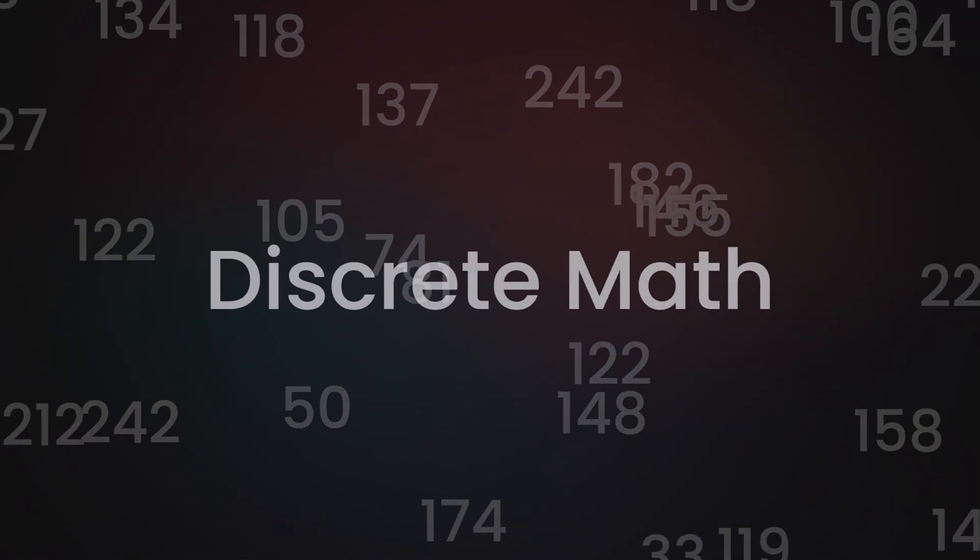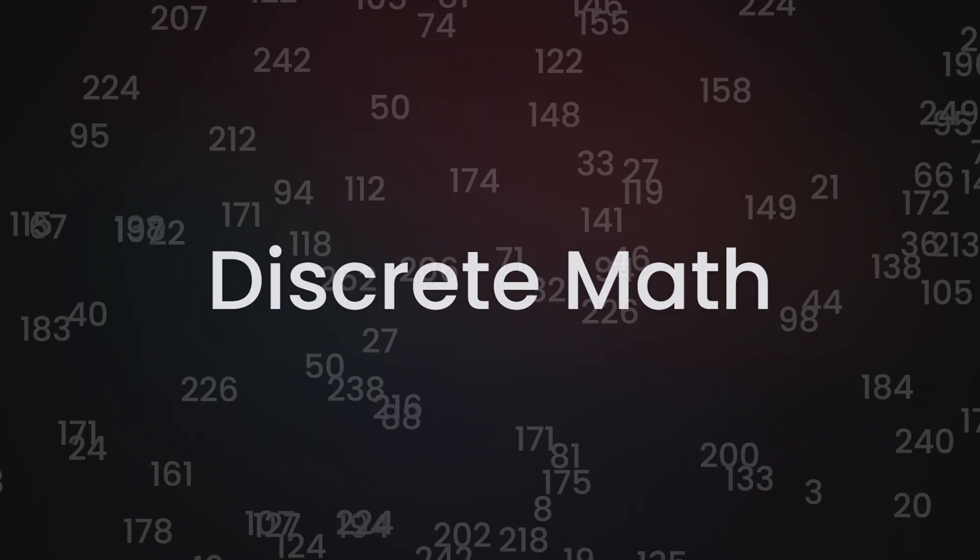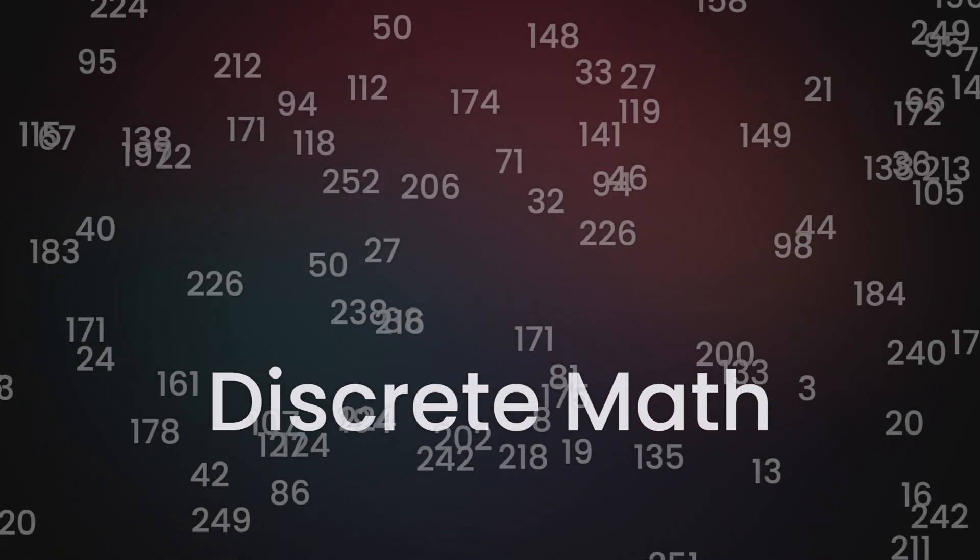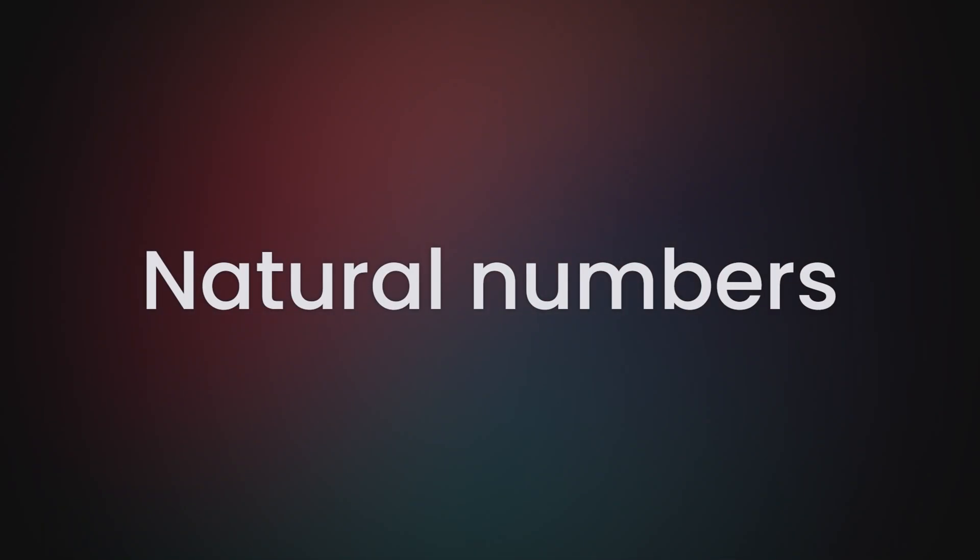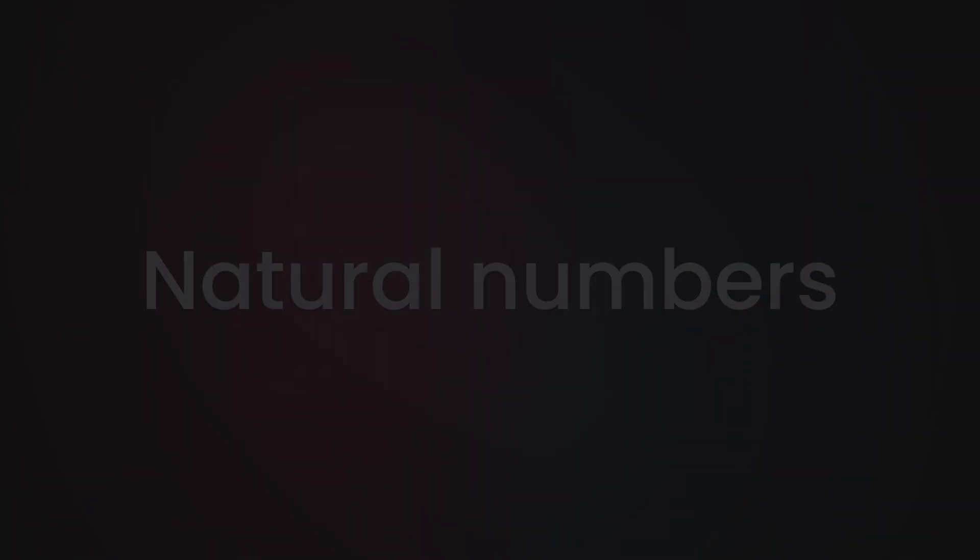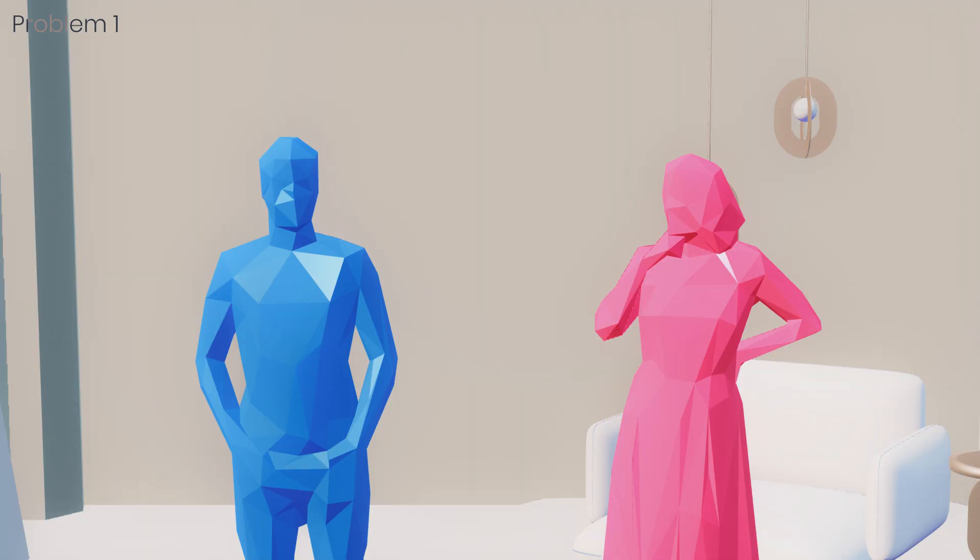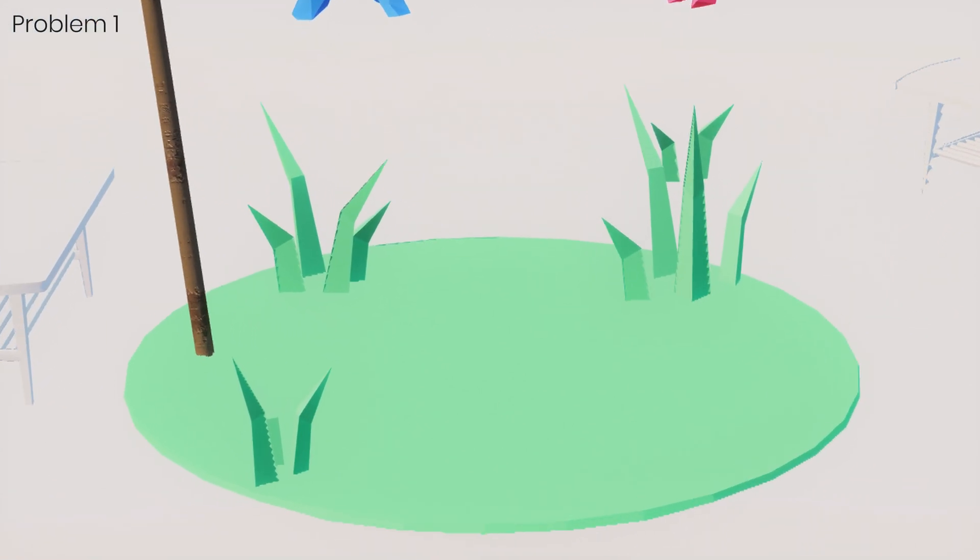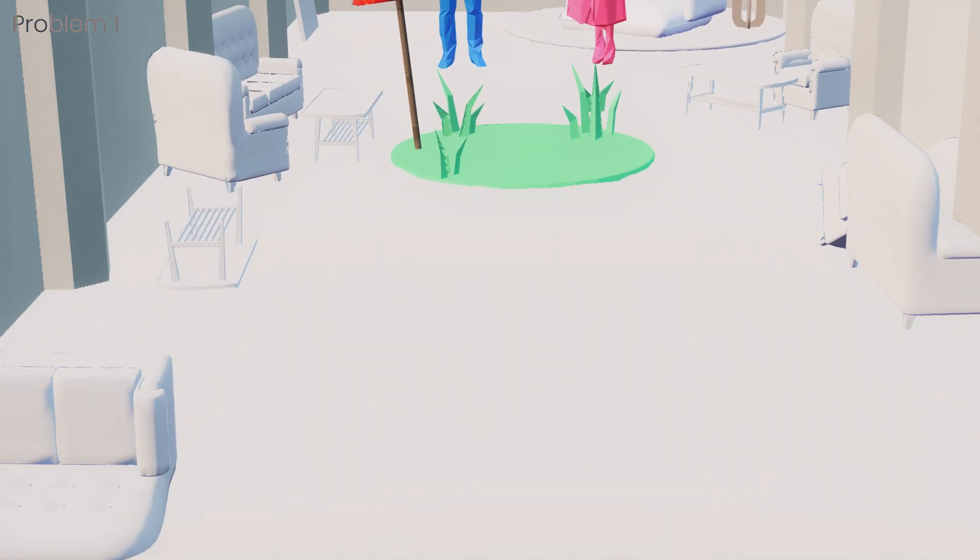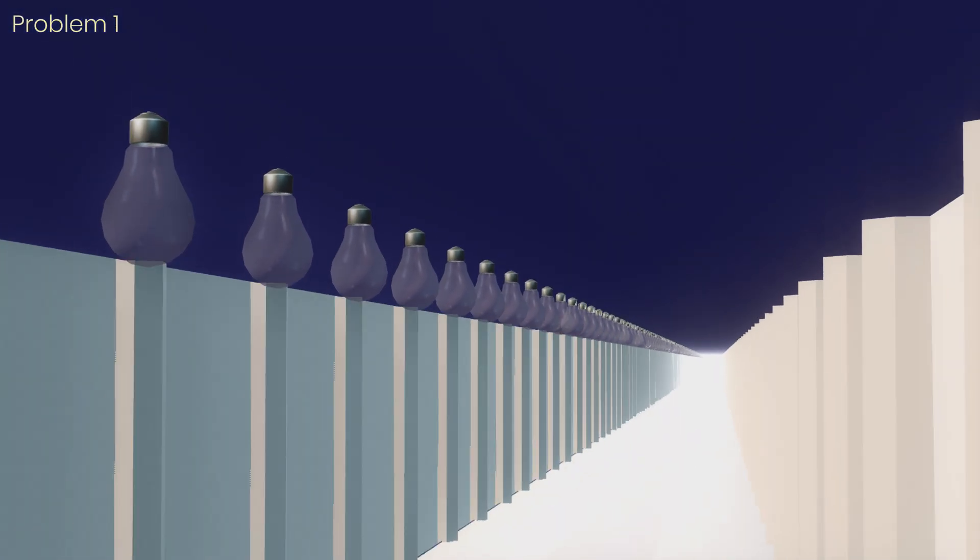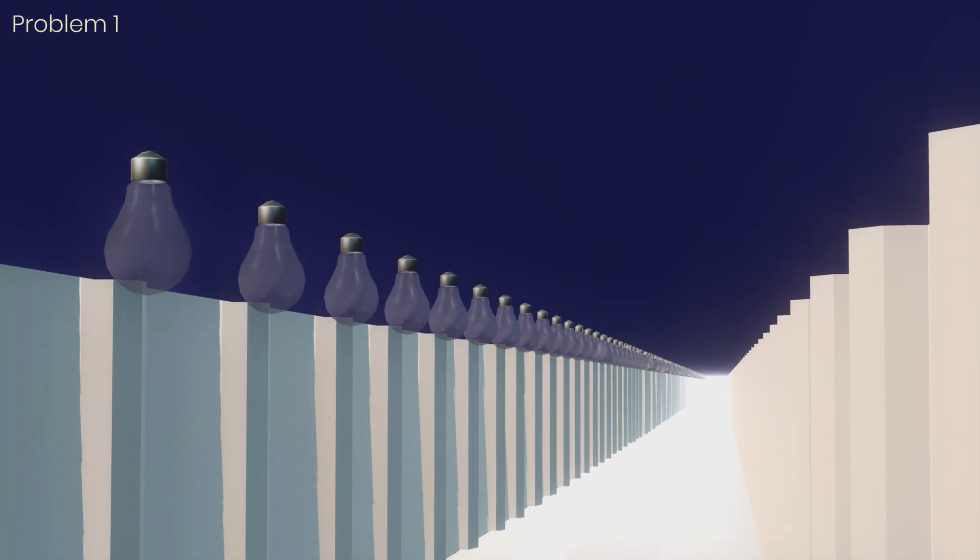Mathematics often begins with discrete countable objects. The first set of numbers we learn about are the natural numbers, so it only feels natural to start here. Alice and Bob have turned their attention to yet another activity that doesn't require touching grass. An endless hallway is lined with light bulbs. Each bulb is connected to a switch and begins turned off.